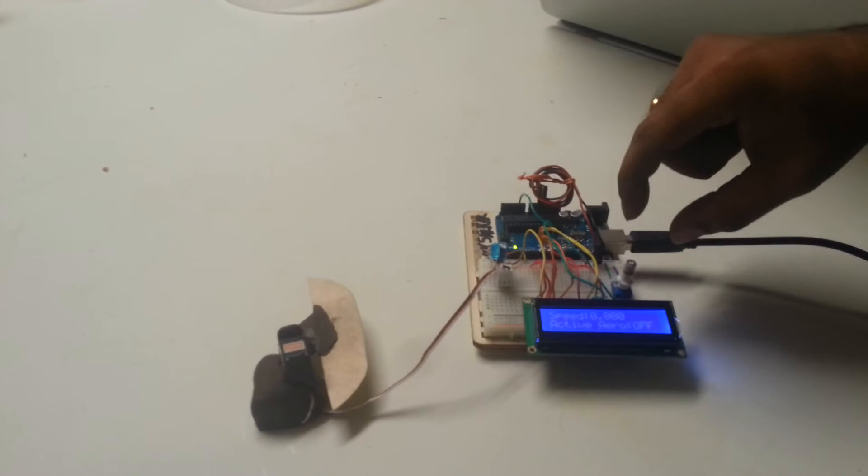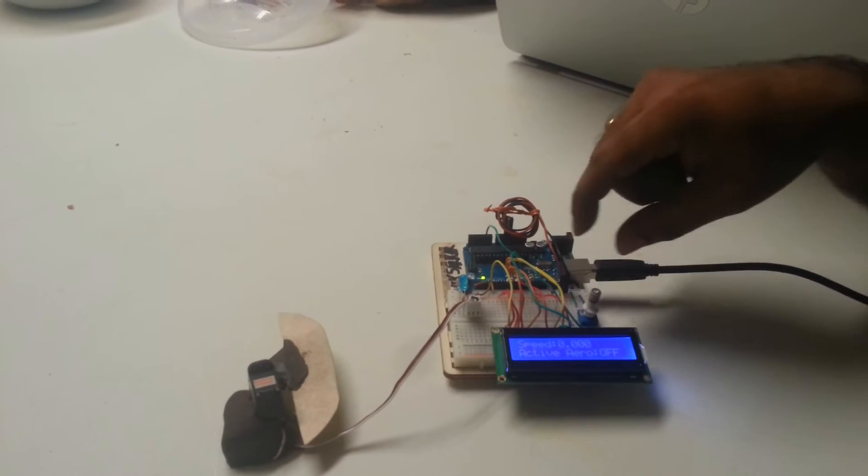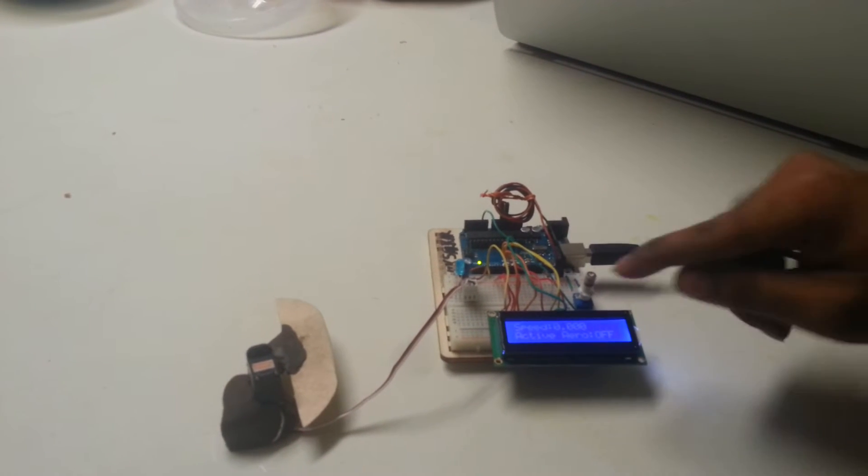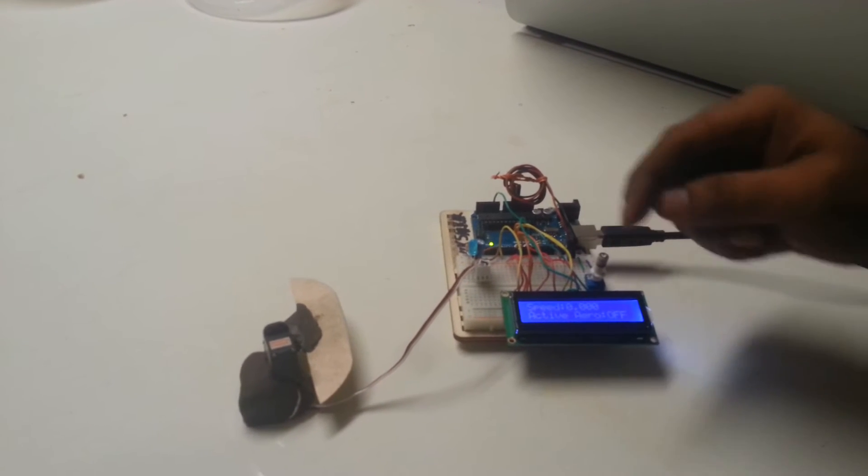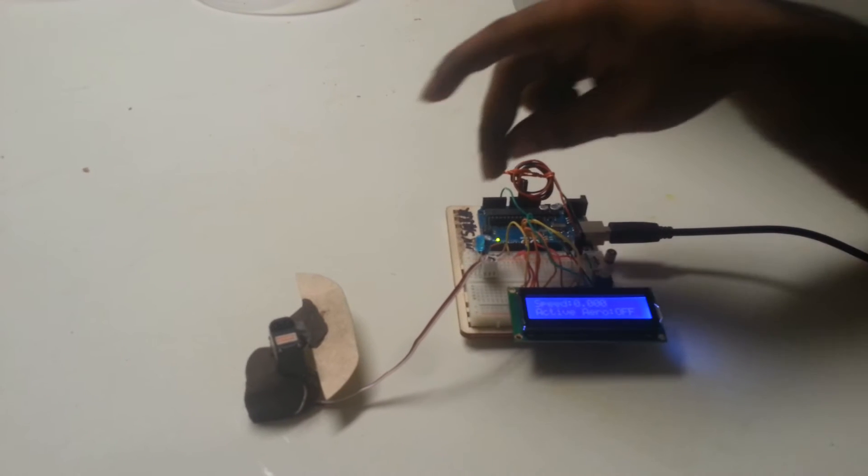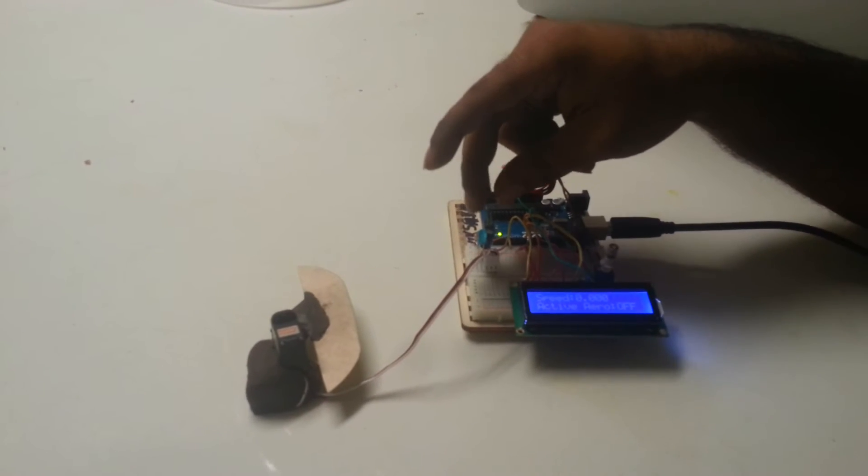As you can see in the circuit, I will be controlling the speed of the car with the potentiometer. The speed is shown on the LCD and the LCD is also showing the current status of whether the active aerodynamics is on and off. This blue LED will also be signaling the same.